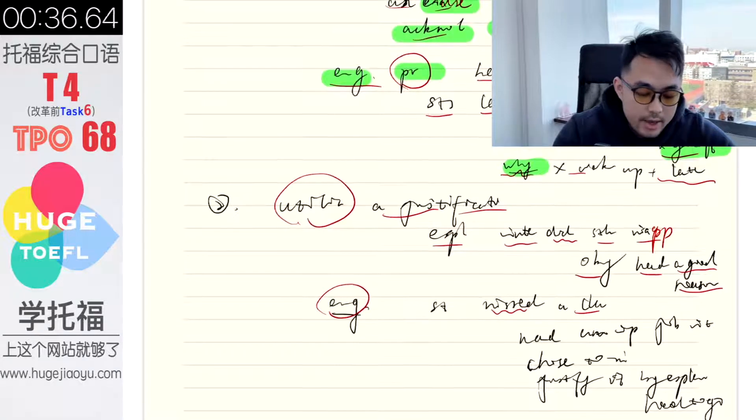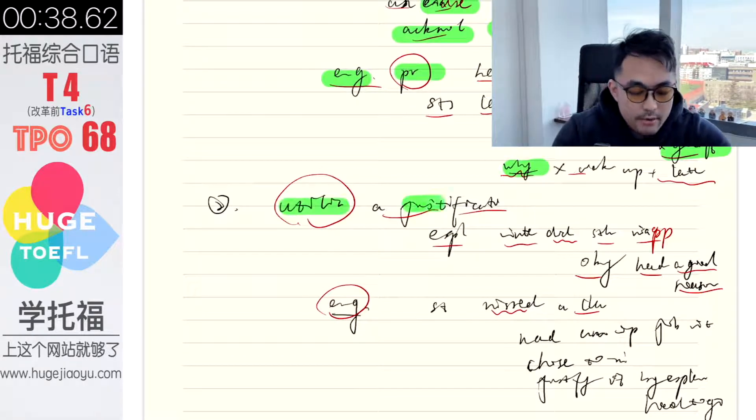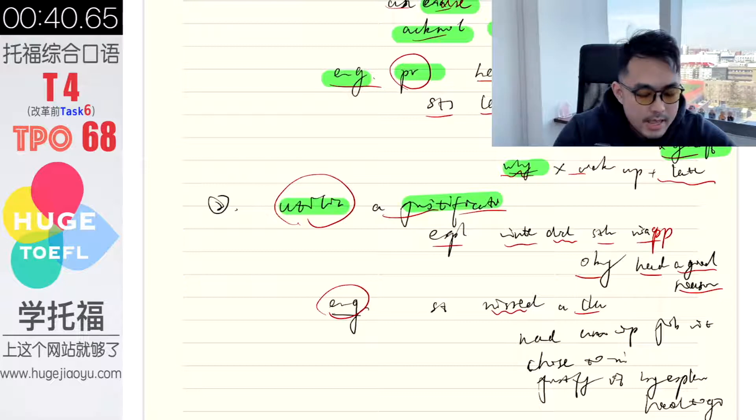And the second way is to utilize a justification. People may explain that they intentionally did something inappropriate, but this time it was okay because they had a good reason to do it.